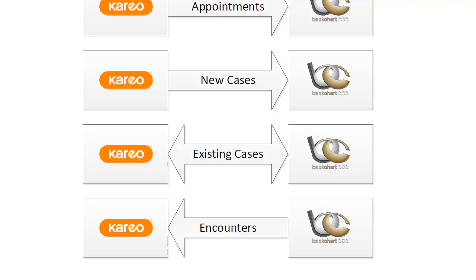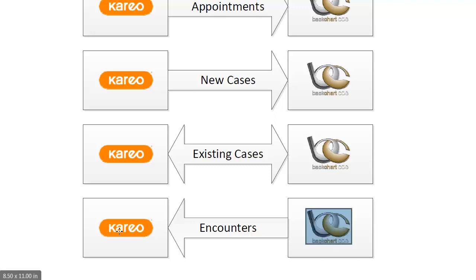Any encounters that are done in Backchart — that includes the documentation, but the big things really are the diagnosis codes and the procedure codes — are going to be transferred from Backchart over to Karyo. Karyo is where you can send it out as a claim and follow up on any denials, or you can post payments from that system.